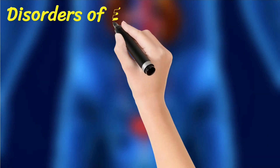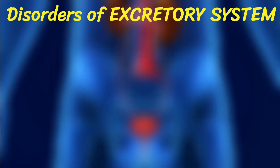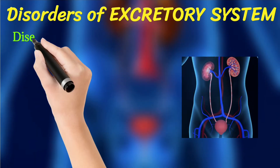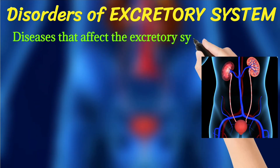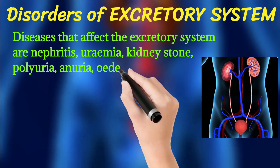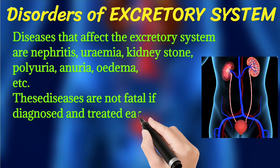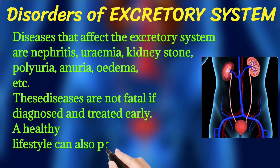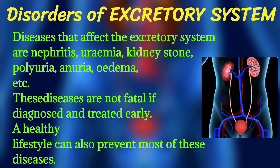Now let's start with the disorders of the excretory system. Diseases that affect the excretory system include nephritis, uremia, kidney stones, polyuria, anuria, edema, and others. These diseases are not fatal if diagnosed and treated early, and a healthy lifestyle can also prevent most of these diseases.